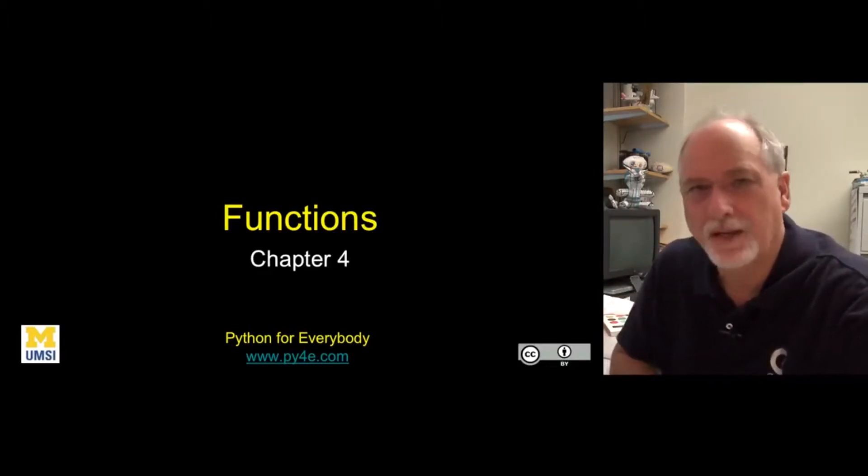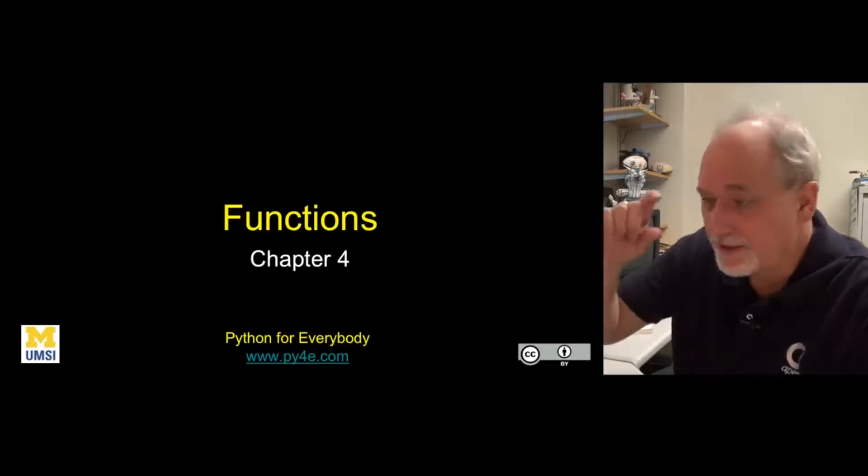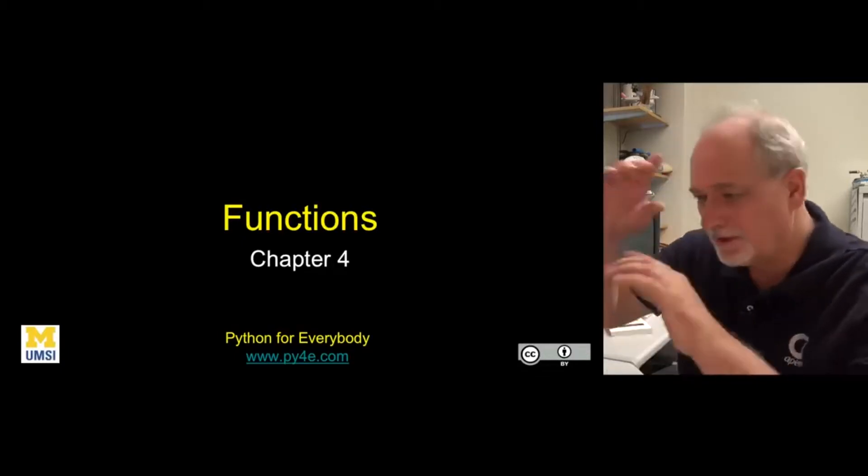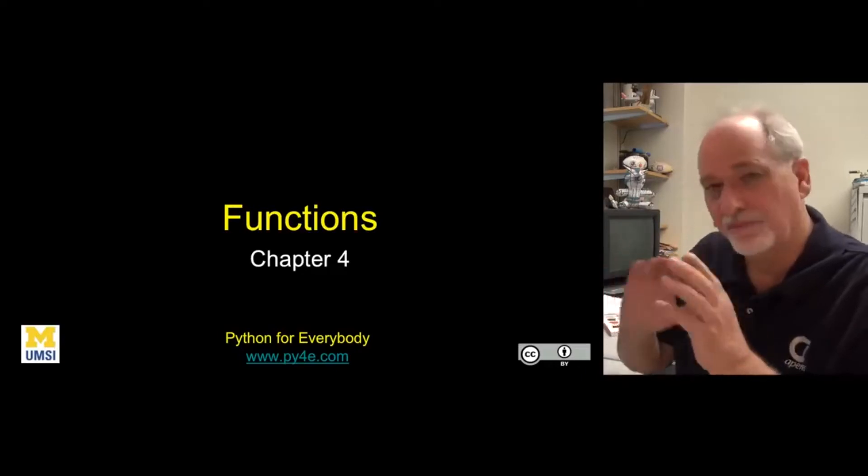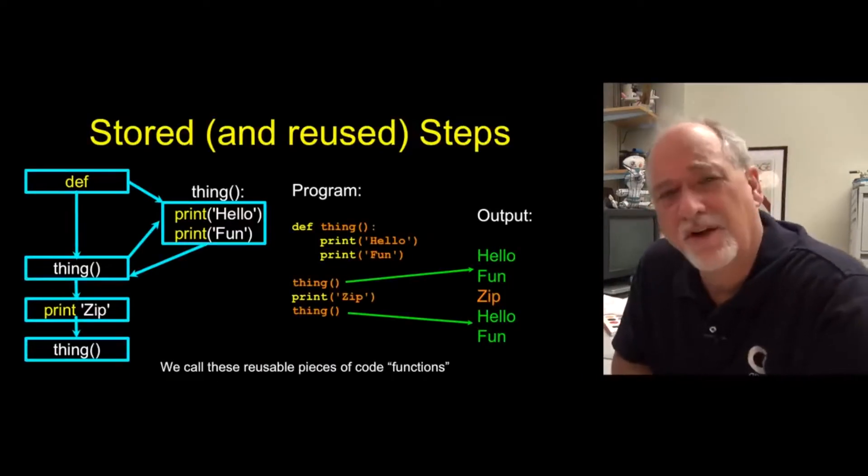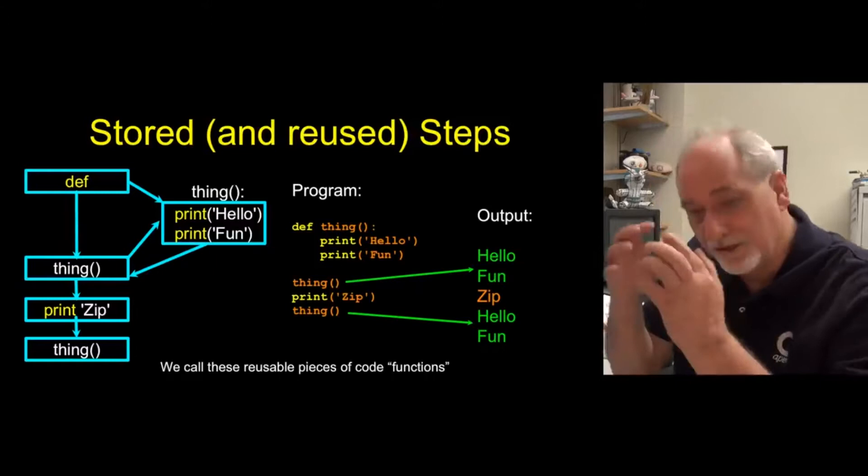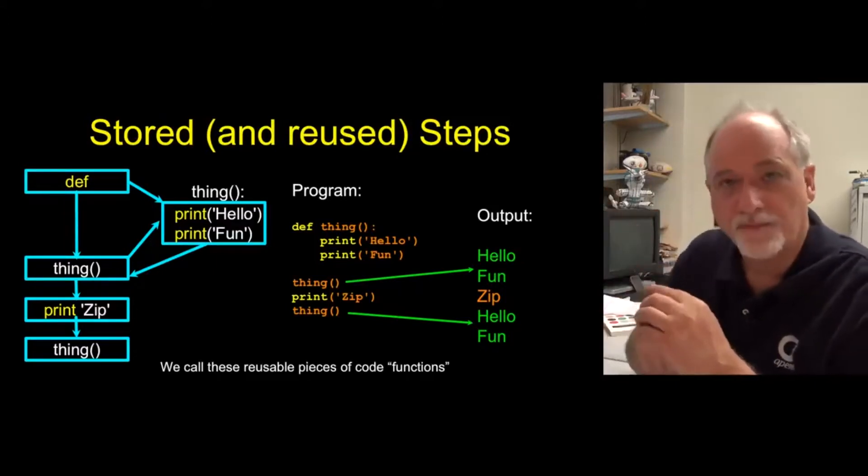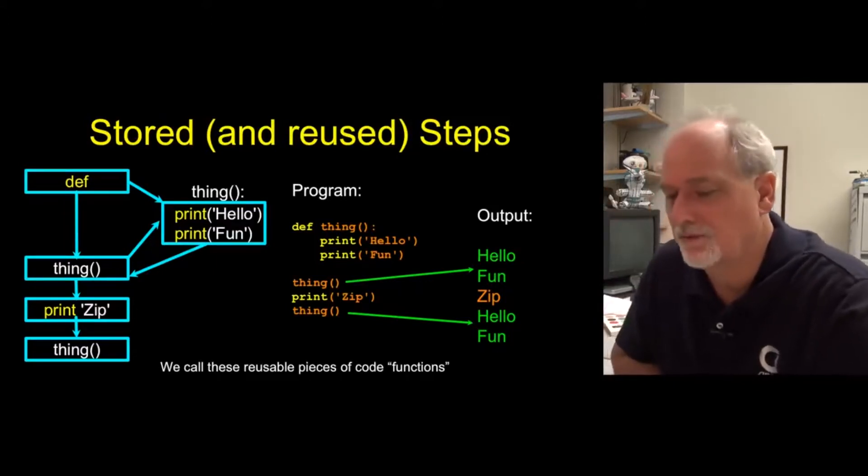It has to do with reliability. If you find something wrong with those four lines of code and you've got them 12 different places in your program, then you've got to find all 12 places and fix them. Collect those to one place and then call them and reuse them. That's the idea of store and reuse.